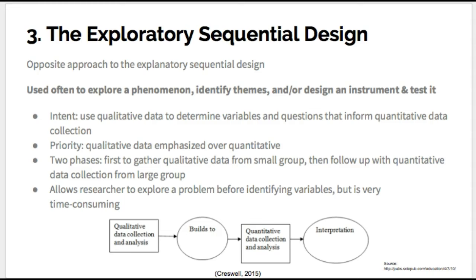Next, and similar to the explanatory sequential design, is the exploratory sequential design, which is also a two-phase model. Instead of collecting quantitative data first, the researcher begins with qualitative data collection. This allows the researcher to connect interviews and/or observations and fully understand the problem before developing the parameters for the quantitative data collection. In an exploratory design, quantitative data is emphasized. The intent of the research is often to explore a phenomenon or theme, or to design an instrument to be tested. The qualitative data is often collected from a small number of individuals, followed by quantitative data collection, such as a survey, for a larger group of individuals.